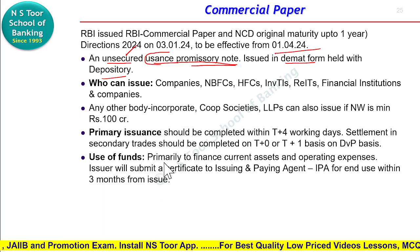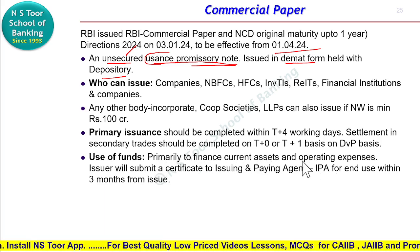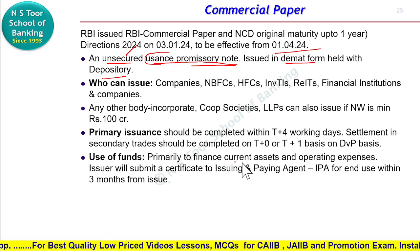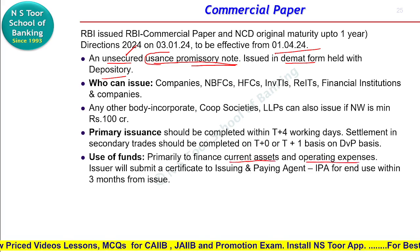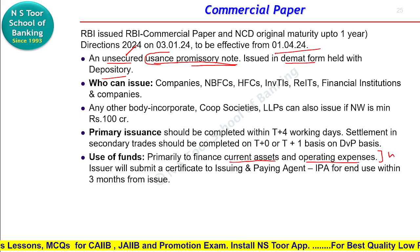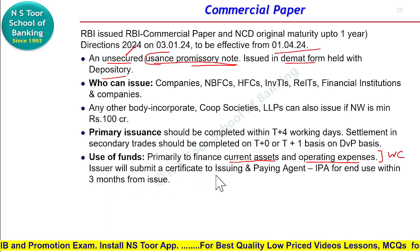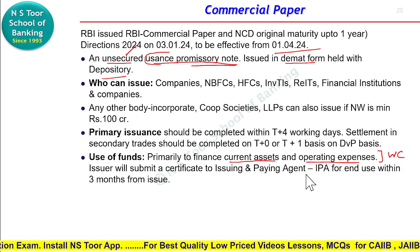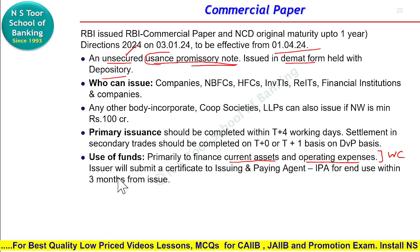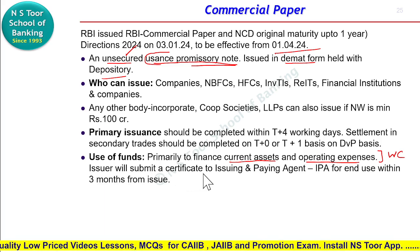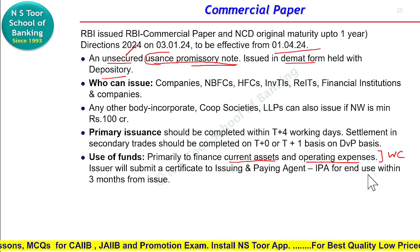Ab commercial paper ke jo funds hain, to unko use kaise karenge? So these will be used primarily to finance current assets and operating expenses — yani isko long-term assets par use nahi kiya jayega. Virtually hum keh sakte hain isko working capital purpose ke liye use kiya jayega. Aur jo issuer hai wo submit karega certificate to the issuing and paying agent regarding the end use, aur uske liye time limit teen mahine ka hai.